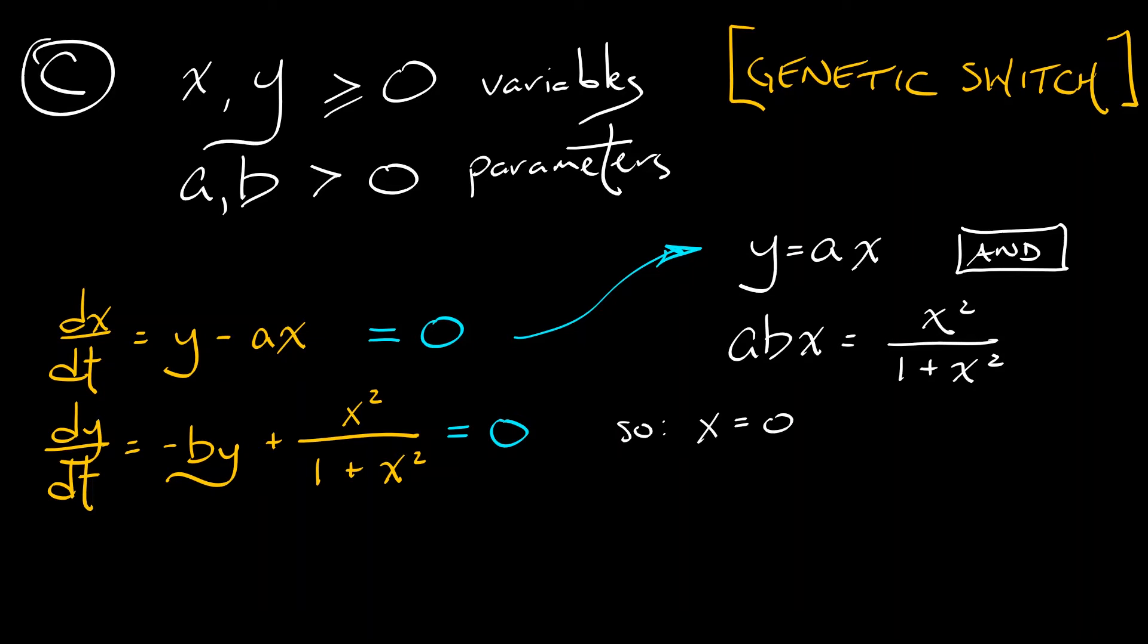So what do we have? x equals zero is certainly one solution to that with y being equal to zero as well. Or factoring out an x from that second equation, what we get is the possibility that ab equals x over 1 plus x squared.